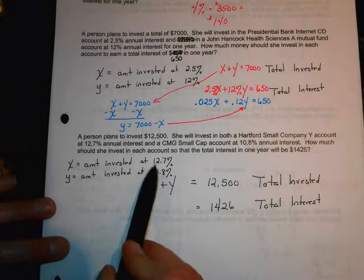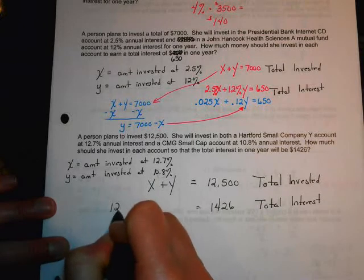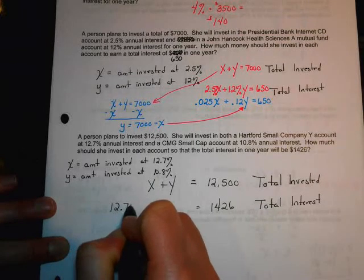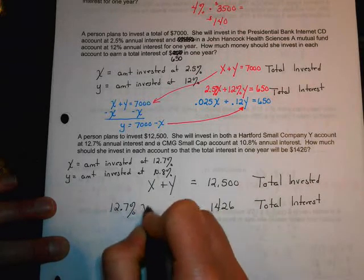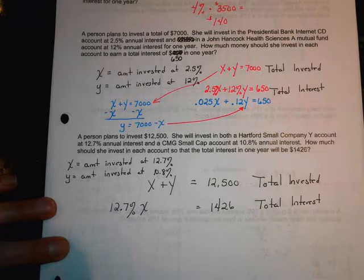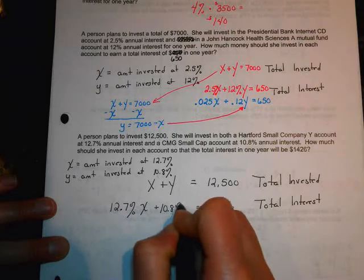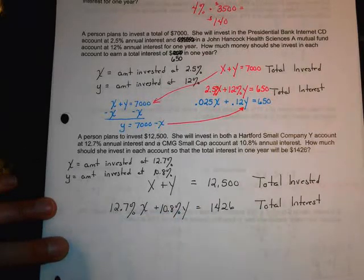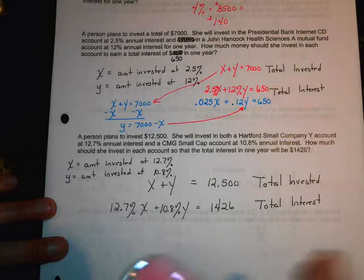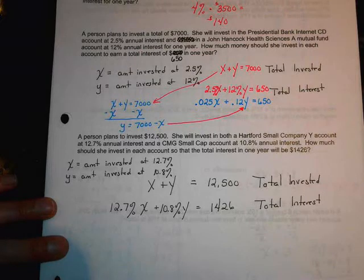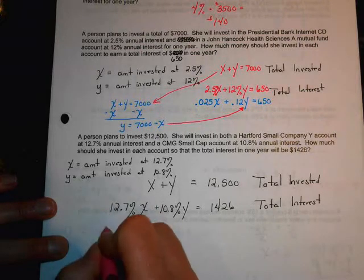I'm going to let X equal the amount invested at 12.7% interest. And I'll let Y equal the amount invested at 10.8% interest. So, I know when I add these two up, it's got to be the total amount that I invested. So, X plus Y is my totals equation.